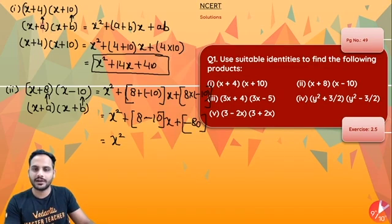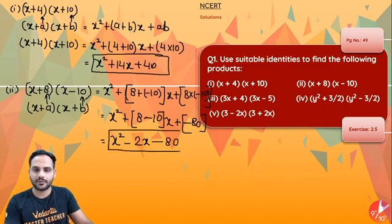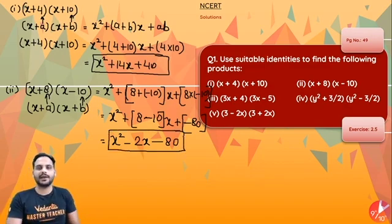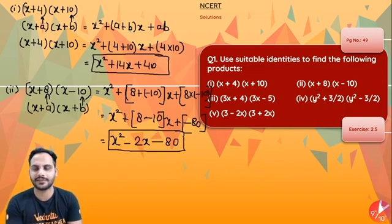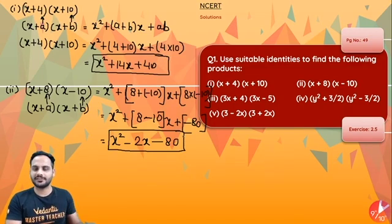Get rid of the bracket, so you will get x square, 8 minus 10 is minus 2, minus 2 into x is minus 2x, plus into minus is again minus 80. So x square minus 2x minus 80 is your answer.